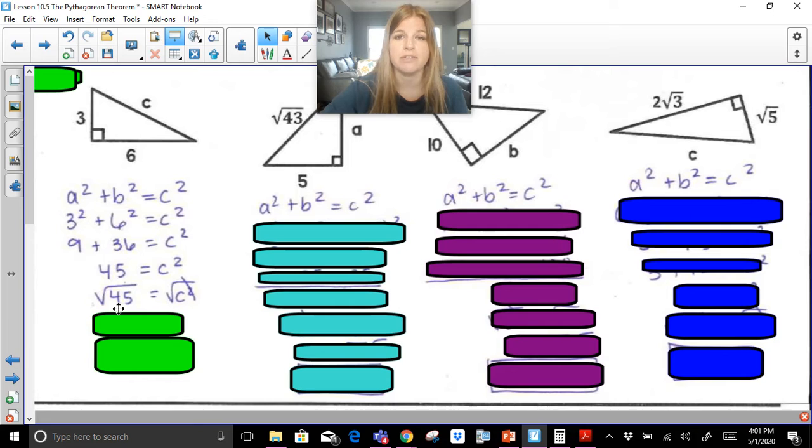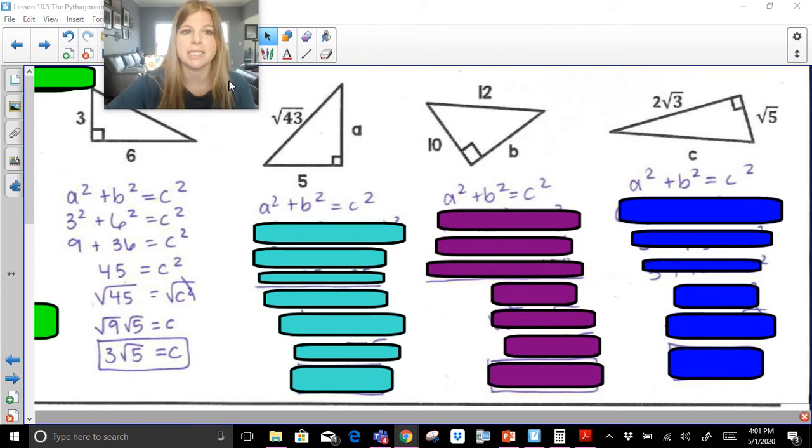Now the square root of 45, we're simplifying radicals. What's the biggest perfect square that goes into 45? It's 9. So this becomes radical 9, radical 5, which is really just 3 radical 5. Awesome. Let's take a look at this next one.